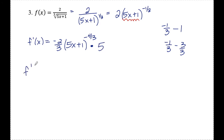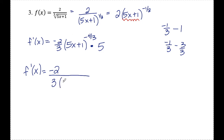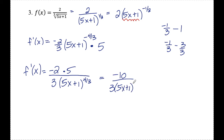I'll clean this up working from left to right. I have a fraction and a negative exponent, so I'll form one big fraction. The negative two goes in the numerator, the three goes in the denominator, and 5x plus 1 to the negative four thirds moves to the denominator to make the exponent positive. The five is also in the numerator. All cleaned up: negative 10 over 3 times 5x plus 1 to the four thirds.